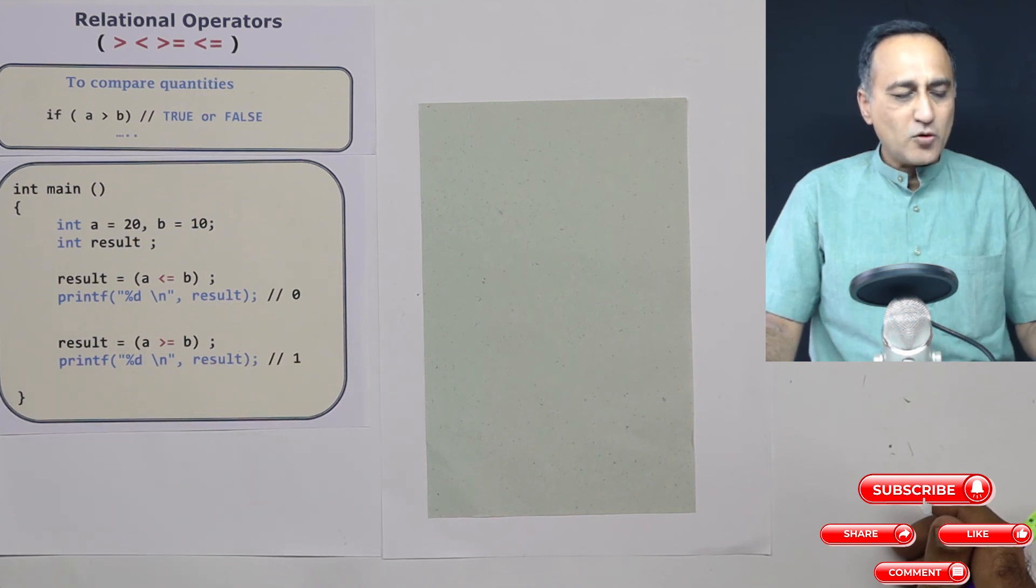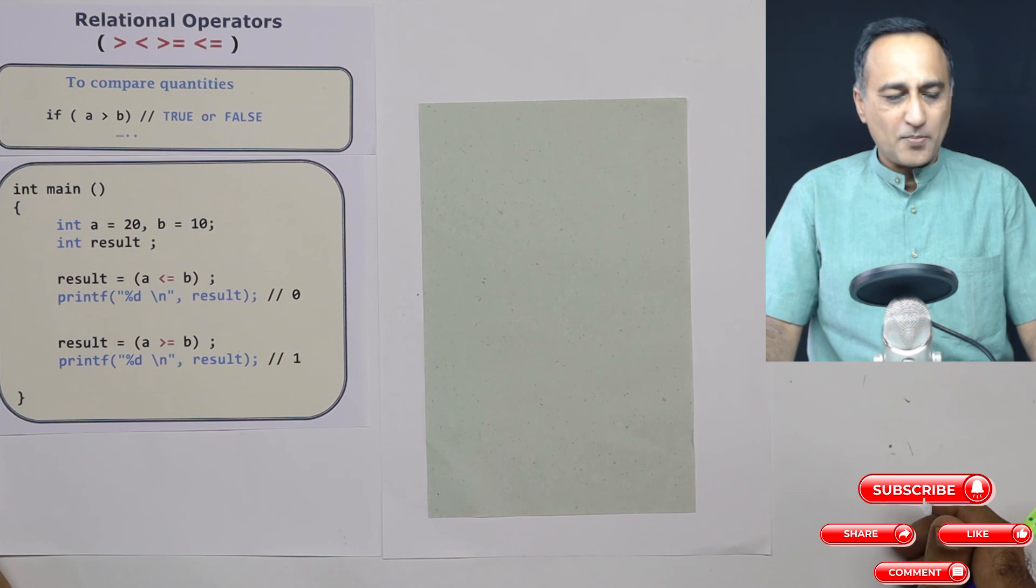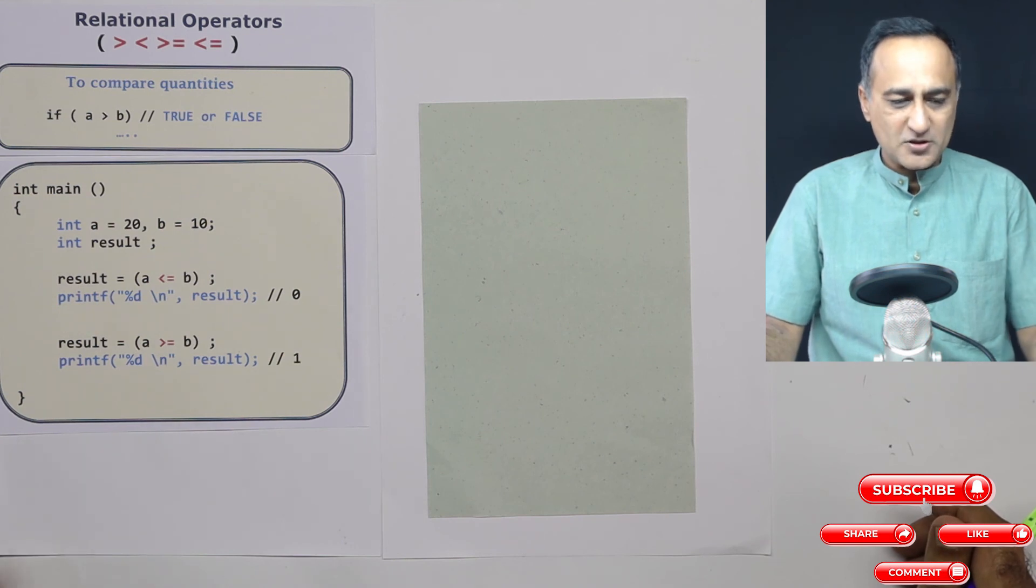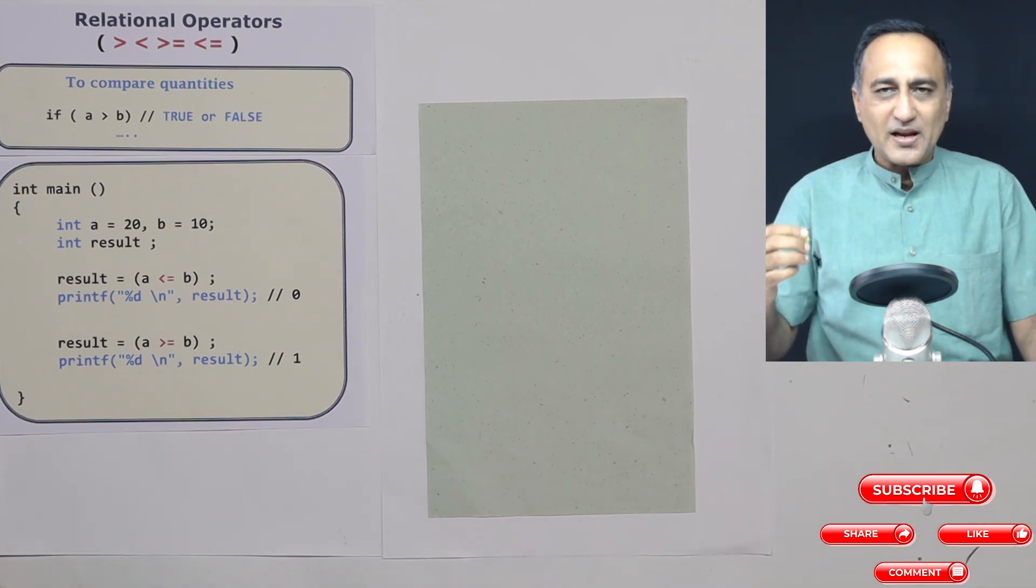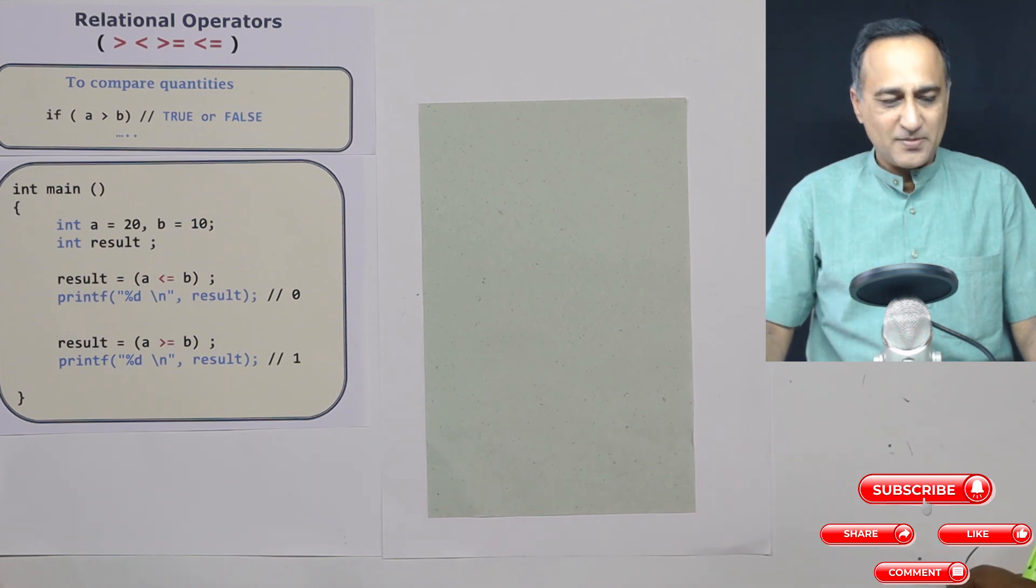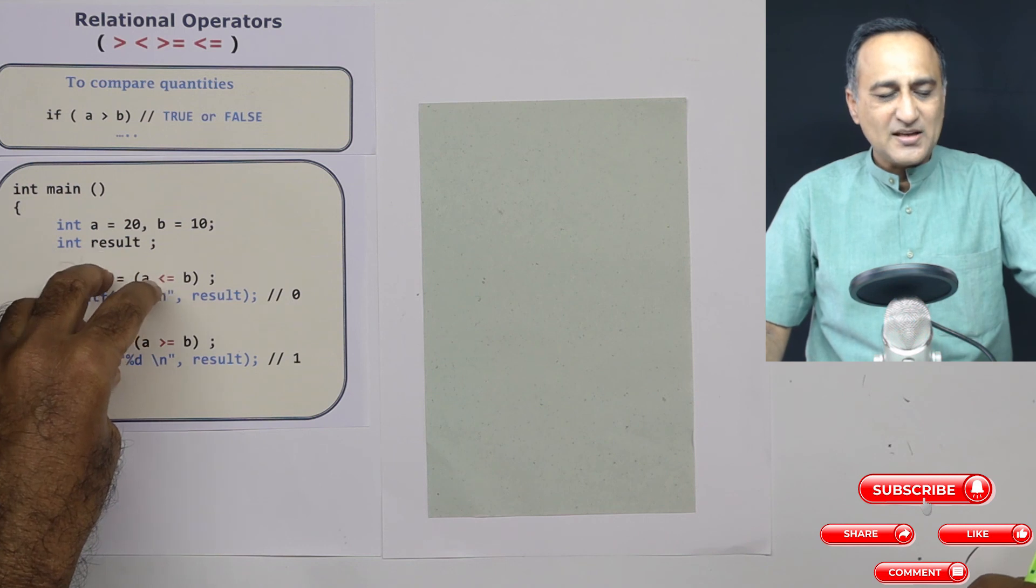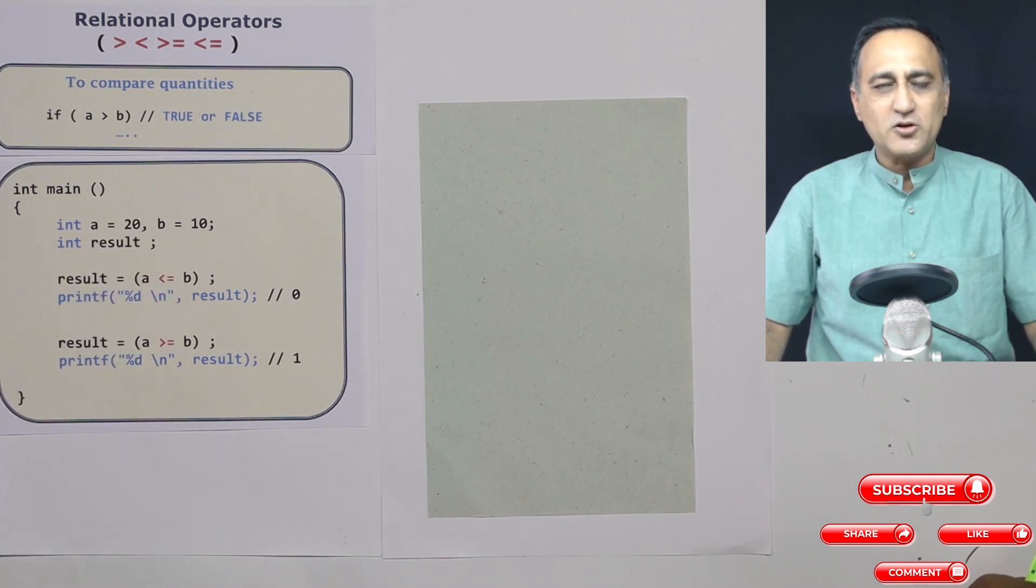So this is how you go about using the relational operators for different operations. Their usage will be very clear when we go about dealing with control flow statements like if, else, if, switch case, while, do while, for, all those statements. Then you will be extensively using these relational operators along with logical operators and equality operators, giving you much more clarity on their usage.